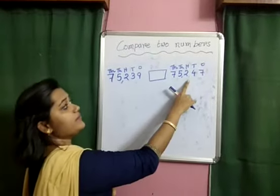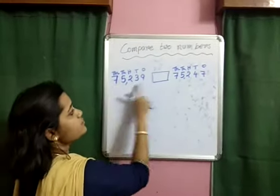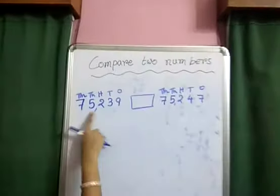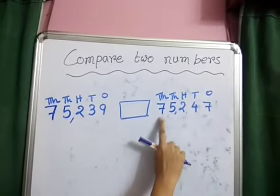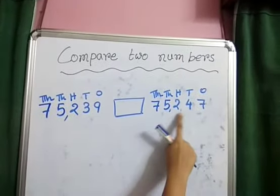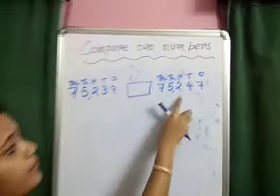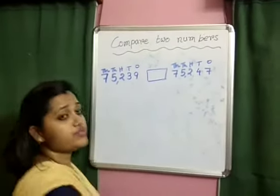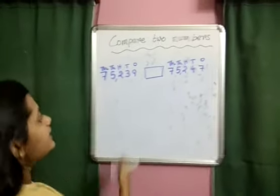In this example, we have two numbers: 75,239 and 75,247. We need to compare these two numbers — which one is bigger and which one is smaller.